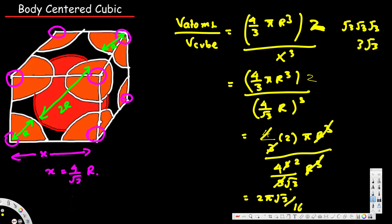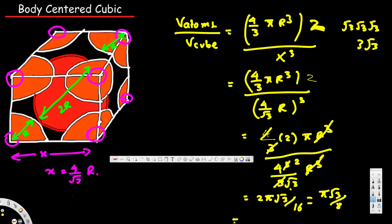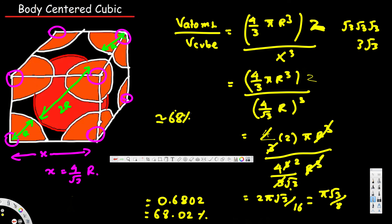Simplifying gives pi times root three divided by eight. Calculating this value gives approximately 0.6802, which means 68.02 percent — in other words, approximately 68 percent of the cube is occupied by atoms. That's the conclusion we derive from this equation, and those are the basic properties of body centered cubic structure. Thanks for watching.